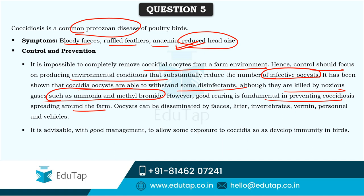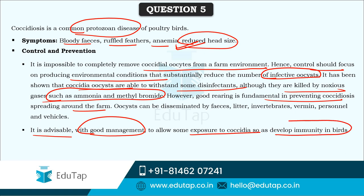Coccidial oocysts are able to withstand some disinfectants, although they are killed by noxious gases such as ammonia and methyl bromide. Good rearing is fundamental in preventing coccidiosis to stop spreading around the farm. Proper hygiene and cleaning should be maintained thoroughly, as these oocysts can be disseminated by feces and litter. It is also advisable to allow some exposure to coccidia so that birds can develop immunity.